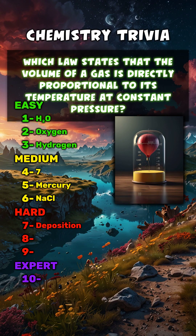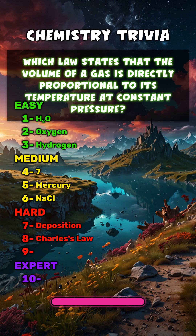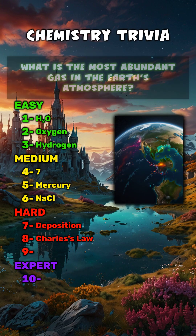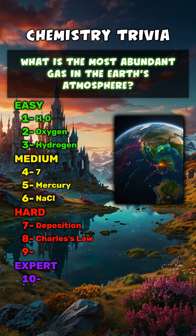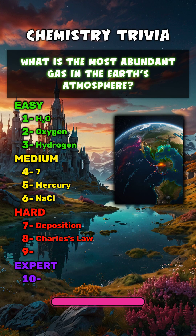Which law states that the volume of a gas is directly proportional to its temperature at constant pressure? Charles' law. What is the most abundant gas in the Earth's atmosphere? Nitrogen.